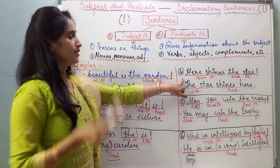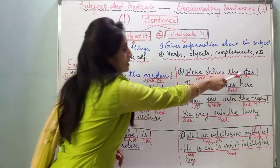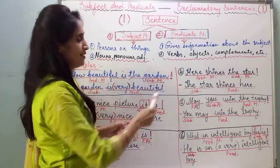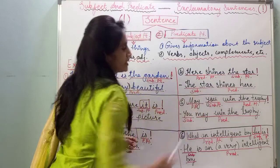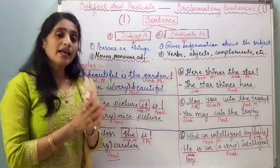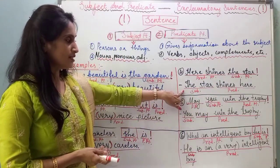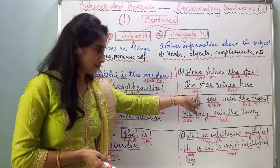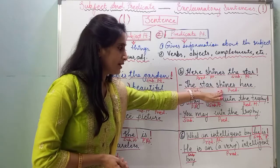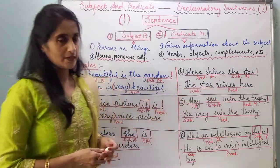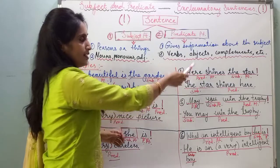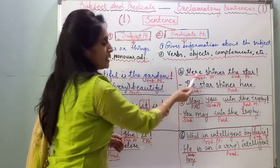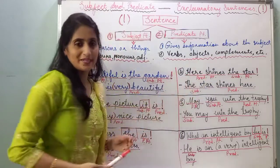The fourth sentence is 'Here shines the star!' The conversion is 'The star shines here.' You can easily identify the subject: 'the star' is the subject, and the remaining part 'shines here' is the predicate. So in the original sentence, 'the star' is the subject part and 'here shines' is the predicate part.